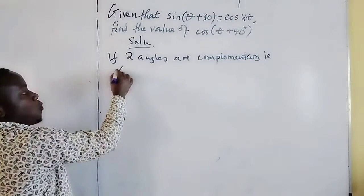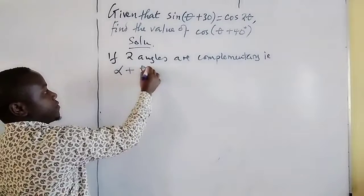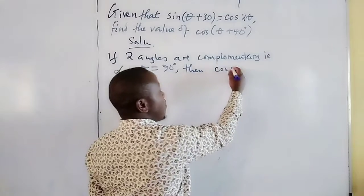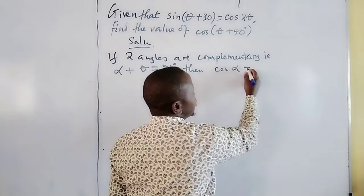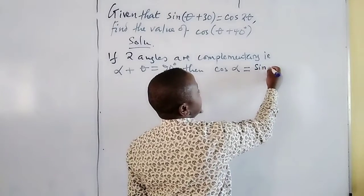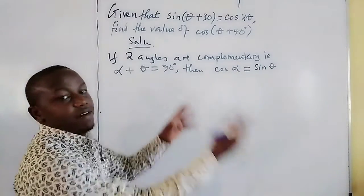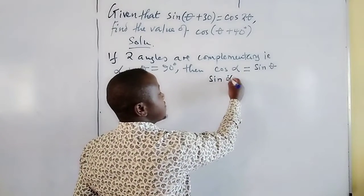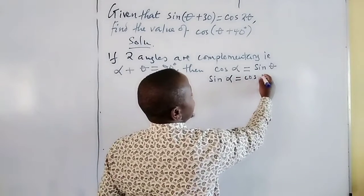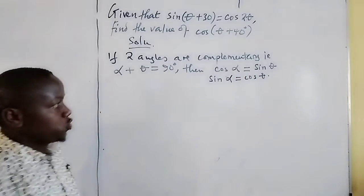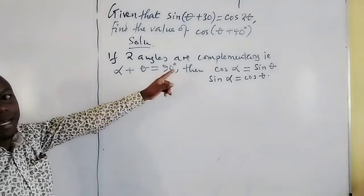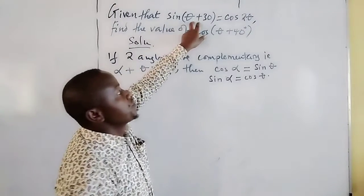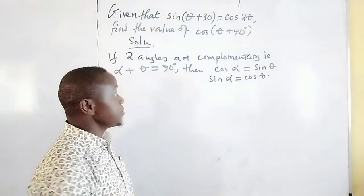That is, one plus the other gives us 90°. Then it follows that cosine of one should give us the sine of the other, and vice versa. If the two acute angles are complementary, and it has been equated that the sine of one angle equals the cosine of the other, then it means...